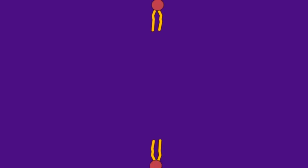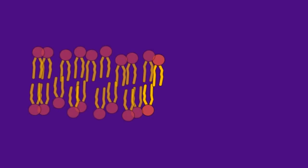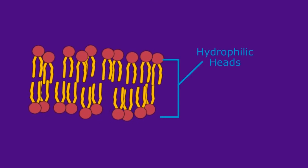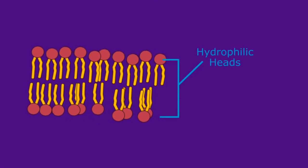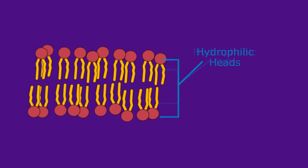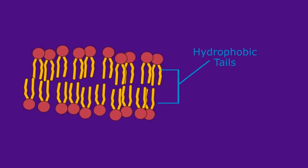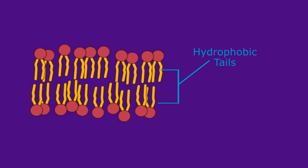Two layers of phospholipid molecules self-assemble so that their water-soluble heads form the surface and interior of the membrane, and the water-insoluble tails face each other.